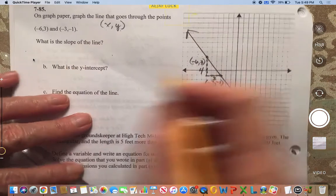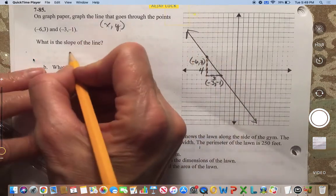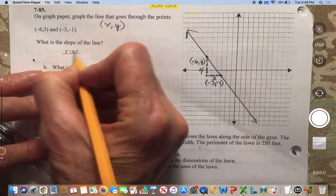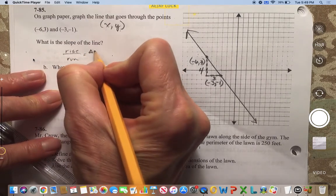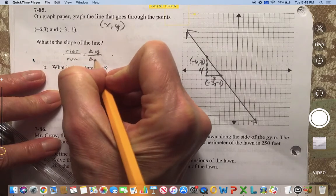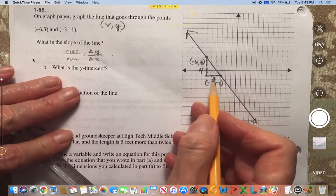So I've got a slope triangle. And remember, rise over run or the change in y over the change in x. So in this case...